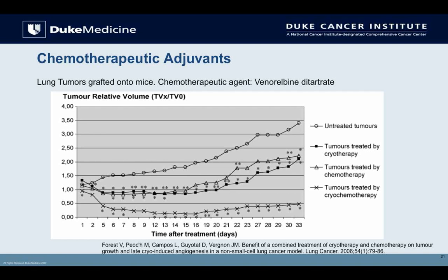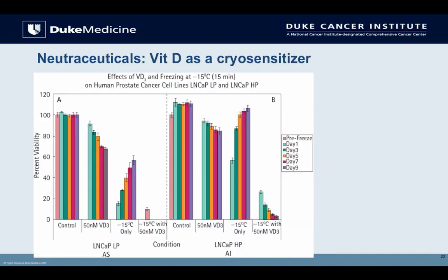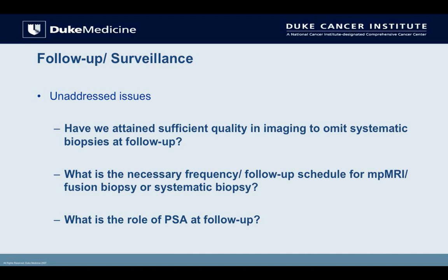Particularly useful are agents that function in the apoptotic zone — agents that push cells into the death pathway at the edge of the ablated area, where cells are most at risk to recover and cause cancer persistence. TRAIL and TNF-alpha are examples. Regarding nutraceuticals, Vitamin D has been shown to be a cryosensitizer. In LNCAP androgen-sensitive and androgen-insensitive cell lines: Vitamin D alone shows a slow fall-off, cryo alone performs moderately, but the combination shows no repopulation. This worked equally well in androgen-insensitive cell lines — important for salvage after radiation — and the lethal temperature changed from minus 40°C to minus 15°C, meaning we can kill at much warmer temperatures.